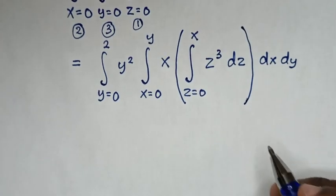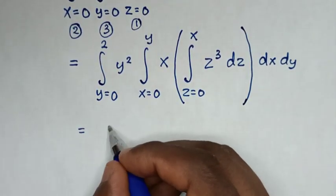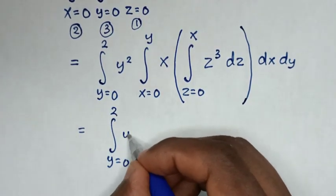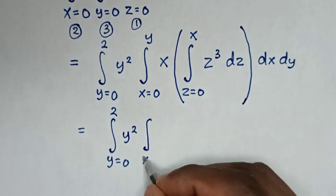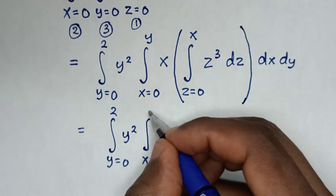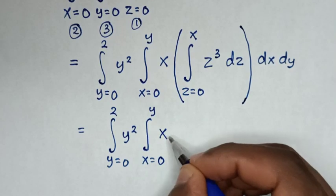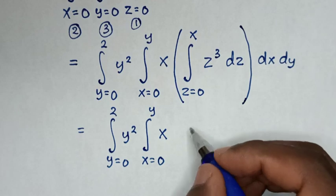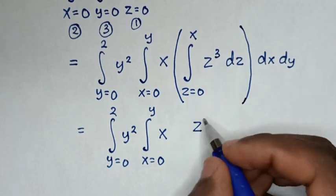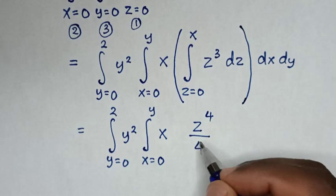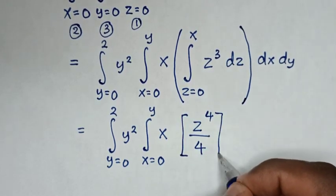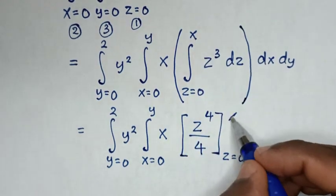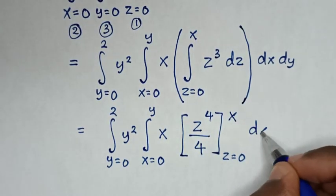Then the next step: it will be equal to integral from y equals 0 up to 2, y², then integral from x equals 0 up to y, then x. We'll integrate z³ with respect to z, so z³ becomes z⁴ over 4, with the limit from z equals 0 up to x, then dx dy.